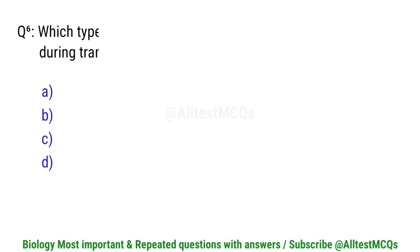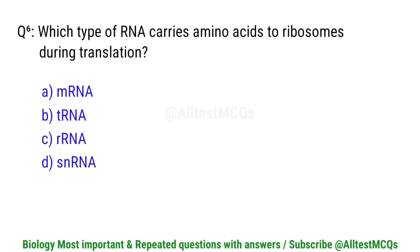Question number 6. Which type of RNA carries amino acids to ribosomes during translation? Right option is B. tRNA.